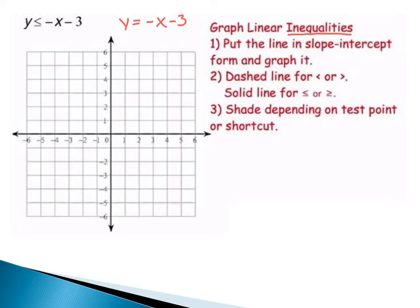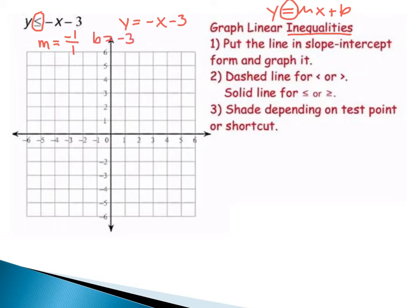Remember how to graph a linear function? First, check if it's in slope-intercept form: y equals mx plus b. It certainly is, but instead of an equal sign we have the inequality less than or equal to. The slope is negative x, meaning negative 1 over 1, and the y-intercept is negative 3. Start at negative 3, then apply slope: down 1, right 1. You can also go backwards: up 1, left 1. Plot as many points as possible.